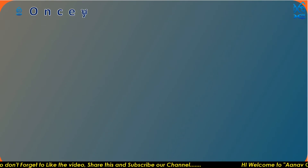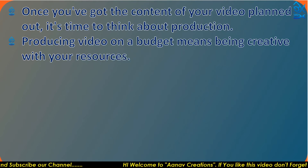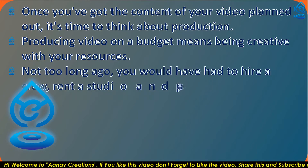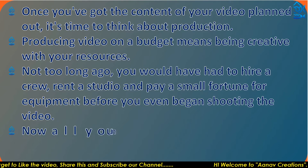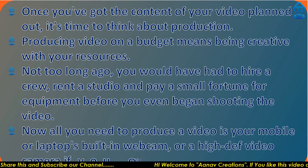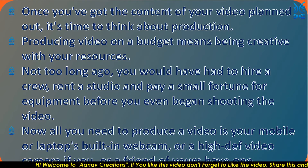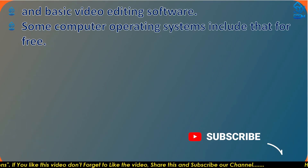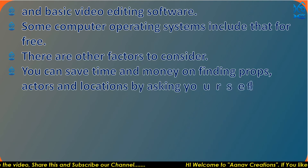Once you have the content of your video planned out, it's time to think about production. Producing video on a budget means being creative with your resources. Not too long ago you would have had to hire a crew, rent a studio, and pay a small fortune for equipment before you even began shooting. Now all you need is your mobile or laptop's built-in webcam, or a high-definition video camera if you or a friend have one, and basic video editing software — some computer operating systems include that for free.